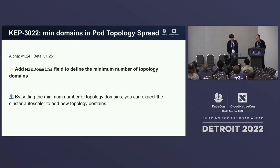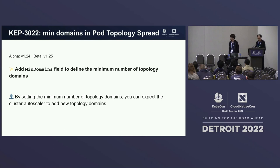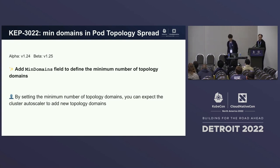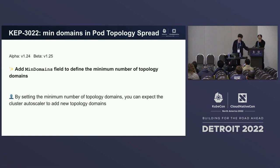A couple of enhancements relate to pod topology spread. First, MinDomains has graduated to beta in 1.25. It adds a new field 'minDomains' to the topology spread constraint, which defines the minimum number of topology domains. The use case is forcing spreading over a minimum number of domains — and if there aren't enough domains present, the cluster autoscaler can provision more. It can only be used with the 'DoNotSchedule' hard constraint.